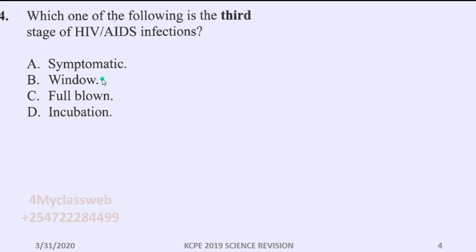If you can remember what you learned in class, most of it is what was required here. You'll find that HIV and AIDS infection normally goes through four stages: starting with the window stage, then the incubation stage, then the symptomatic stage, and finally the fourth stage, which is full-blown.